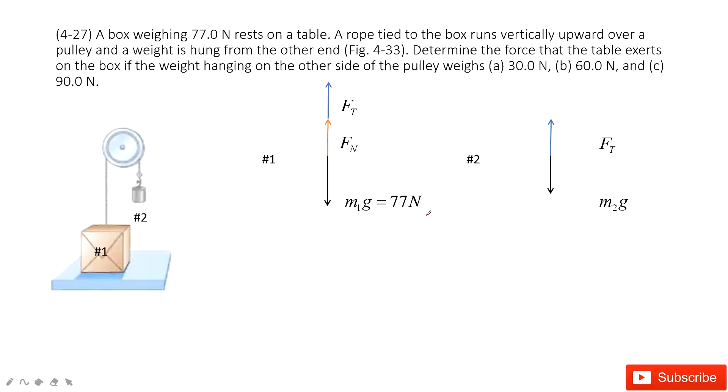And then we can write Newton's second law. For Newton's second law, we look at number 1. So we can see Ft plus Fn minus M, the gravity, M1g equals 0, because this system keeps stationary, so acceleration is 0.